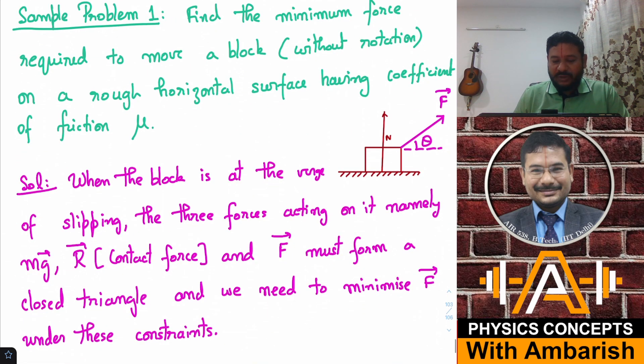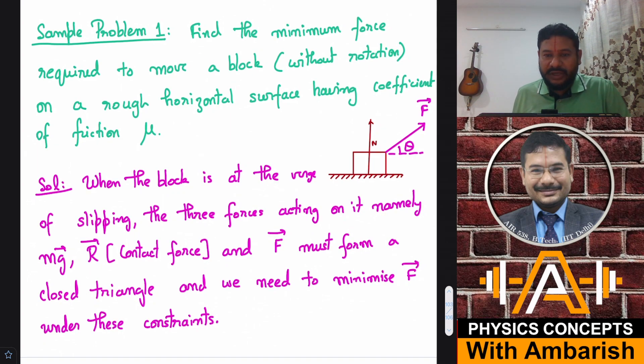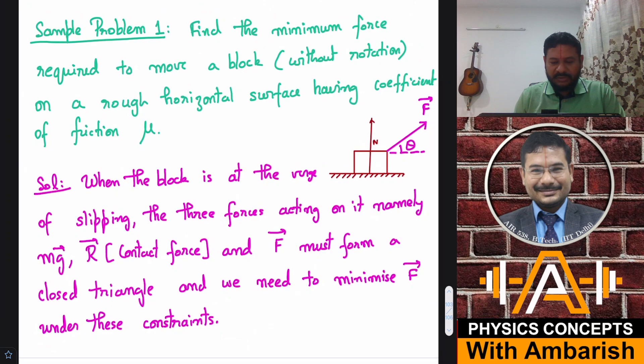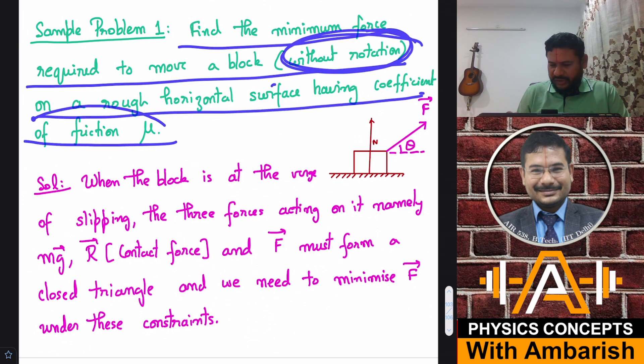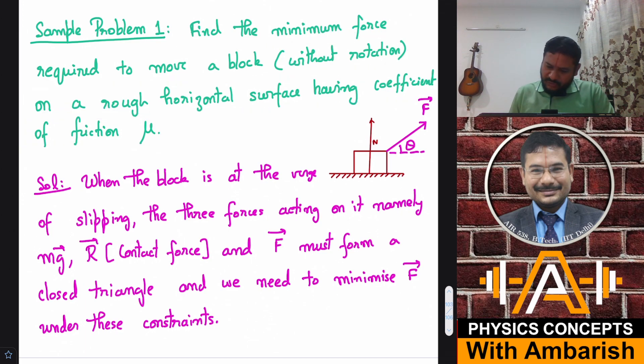Now, before I solve the actual problem, I've given a sample problem so as to make you understand the concept in a simpler context and then we'll extend this same idea to the current problem. What's the question? Find the minimum force required to move a block without rotation on a rough horizontal surface having coefficient of friction μ. We are not worried about rotational effects, torques and all. We just want to make it slip on the rough horizontal surface and the force can be applied at any angle and we want to find out what's the minimum required value of this force.